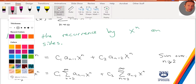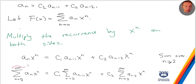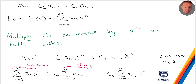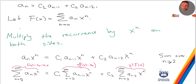This left-hand sum is just f(x) minus a_0 minus a_1·x. The c1 sum is x·f(x) minus a_0 times x, and the c2 sum is just x squared times f(x). So as usual, I can pull all my f(x) terms to one side and everything else to the other side.